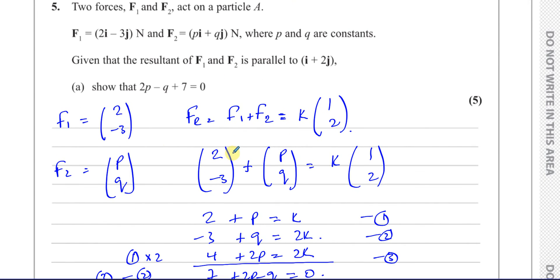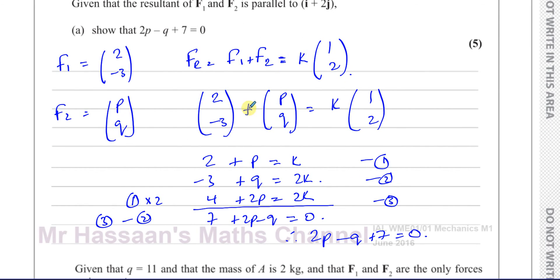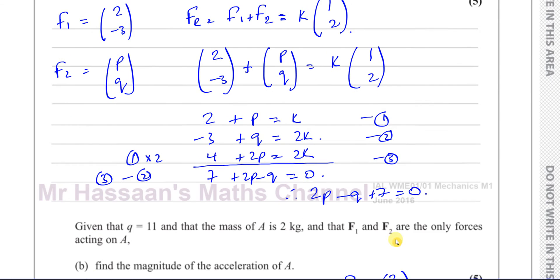So the important points here: the resultant of two vectors is found by adding them together. And when a vector is parallel to another vector, it's not equal to it, but it's equal to some multiple of it. We can say that if these are equal, then 2 plus P must be the same as K, and minus 3 plus Q must be the same as 2K. And we can solve and get rid of the Ks and find an expression for P and Q together.